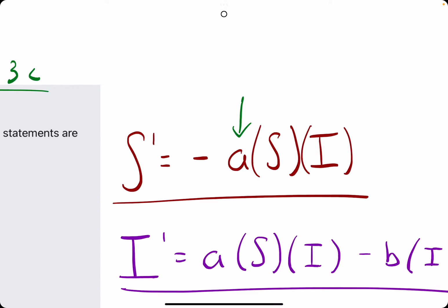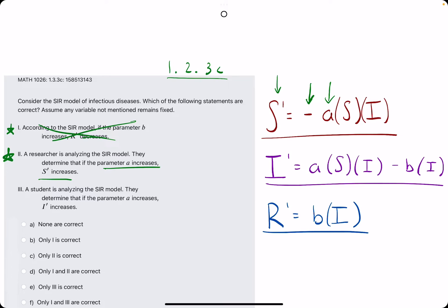Let's think about A. If A increases and A has a negative in front of it, that's going to bring S' down with it. So if A is increasing, the negative's in front, so the overall value will go down. S' will be decreasing if A increases, so that's not what they say. Statement two is also false.